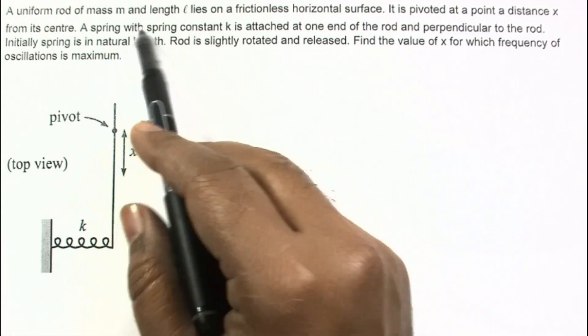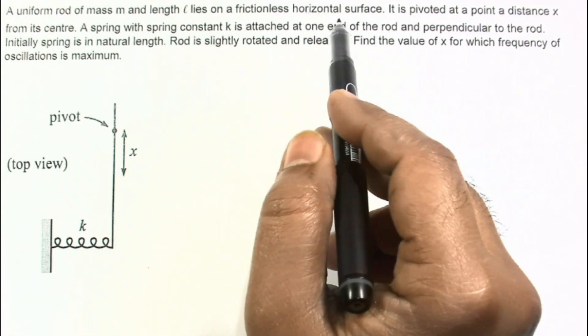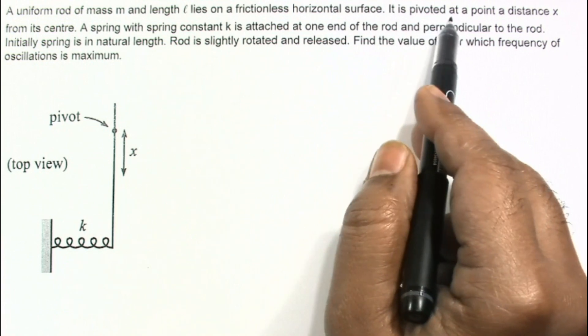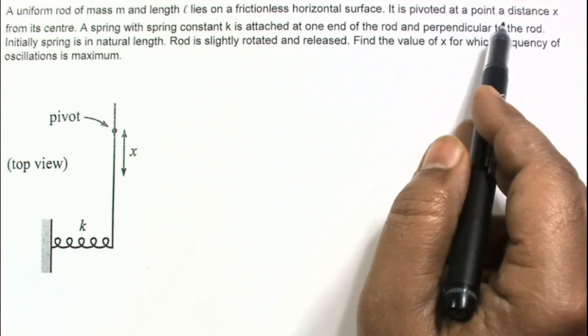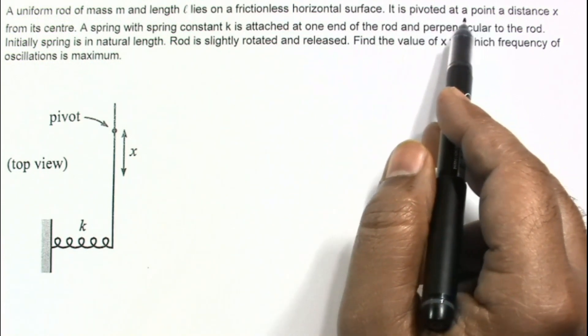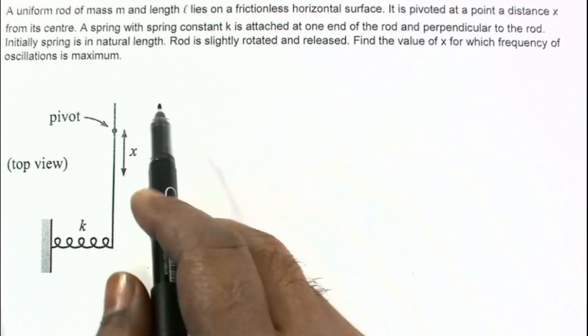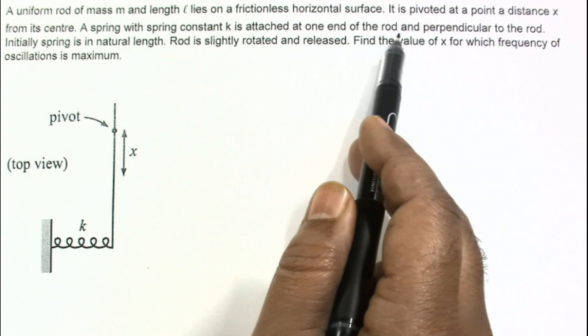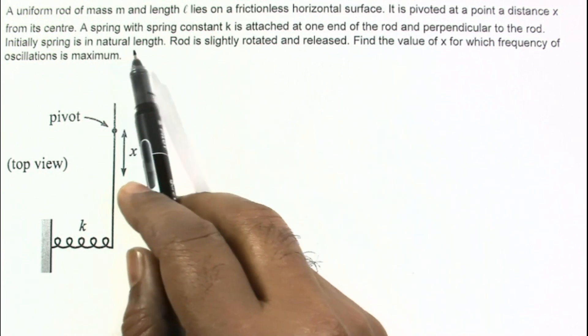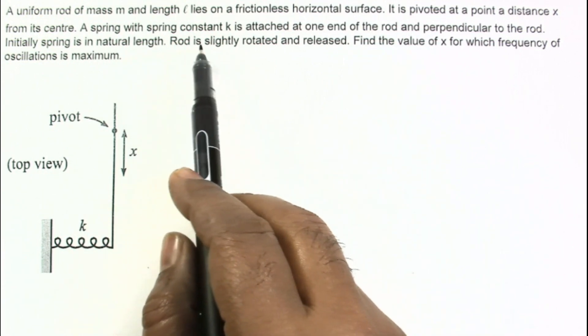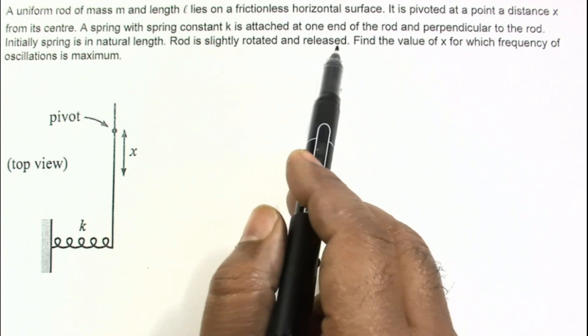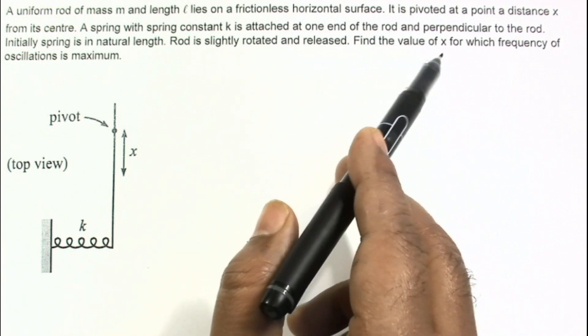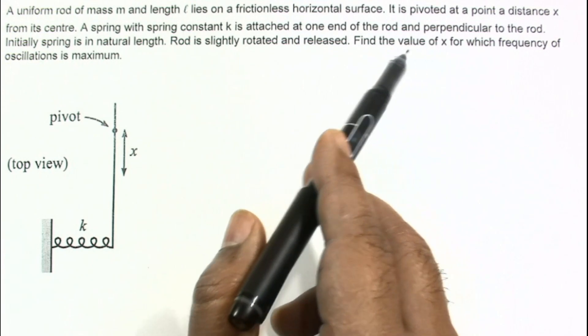In the given problem, a uniform rod of mass m and length L lies on a frictionless horizontal surface. It is pivoted at a point at distance x from its center. A spring with spring constant k is attached at one end of the rod and perpendicular to the rod. Initially the spring is in natural length. The rod is slightly rotated and released. Find the value of x for which frequency of oscillation is maximum.